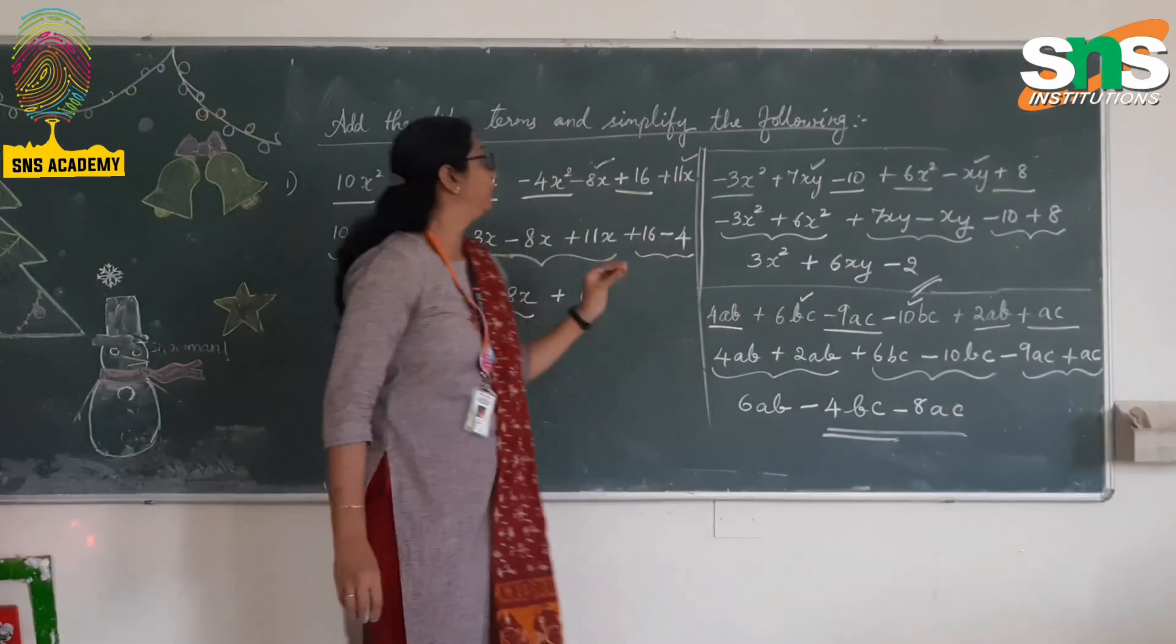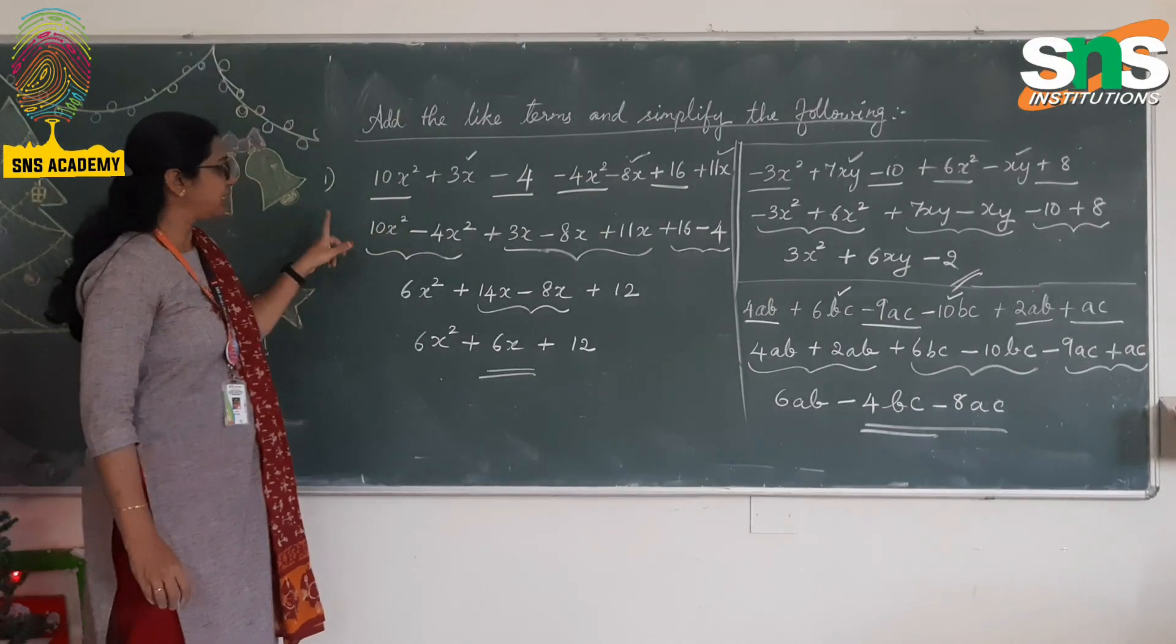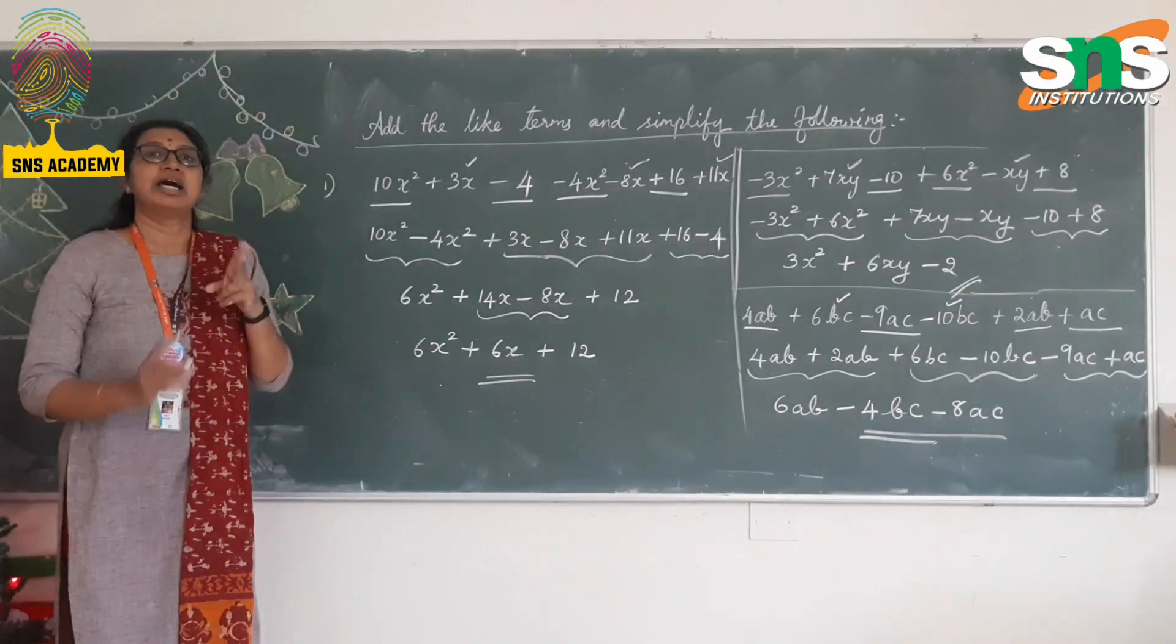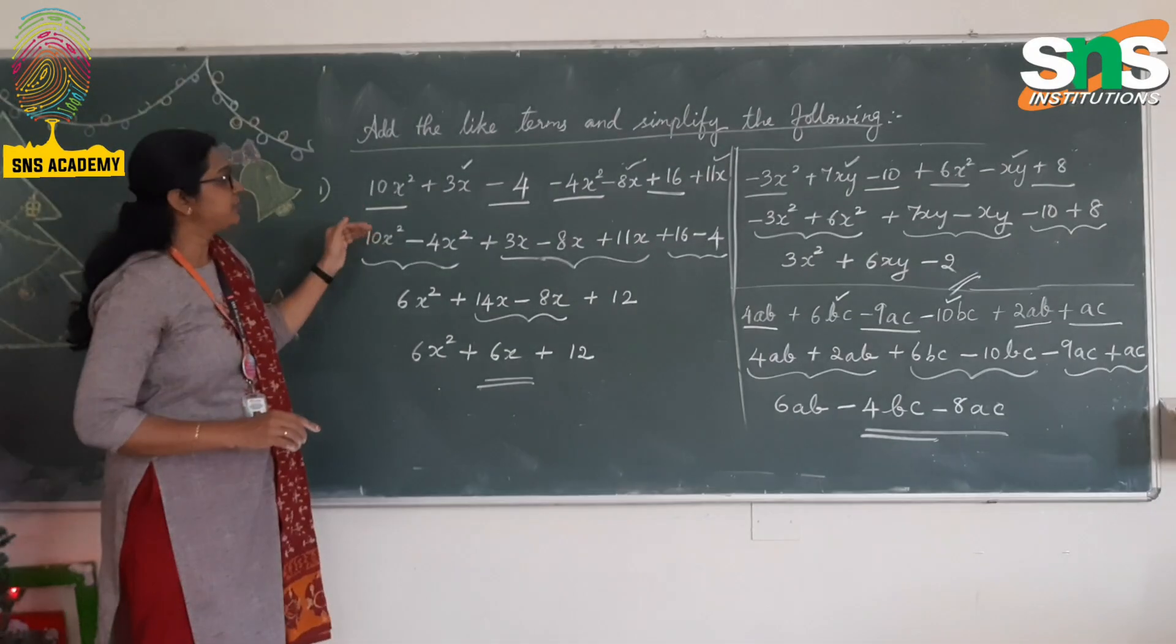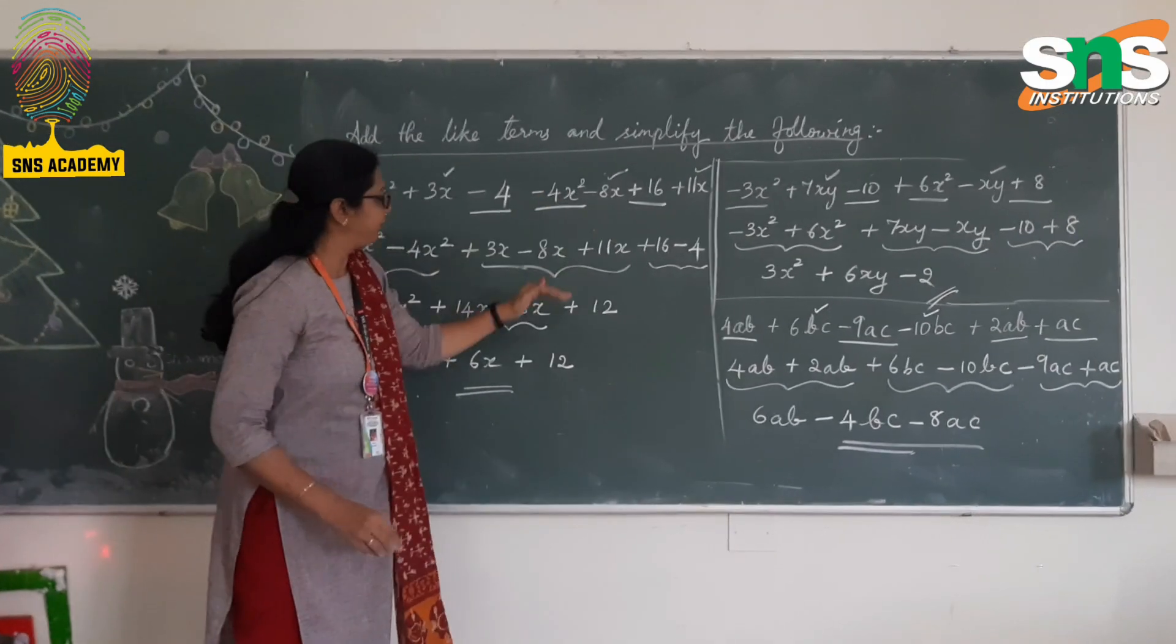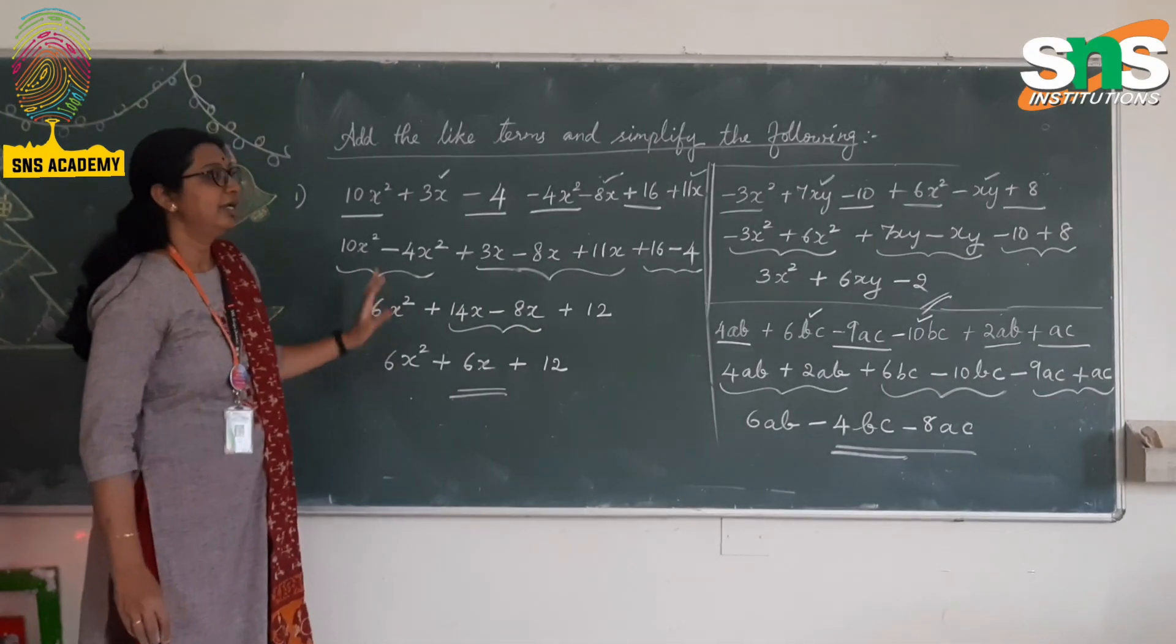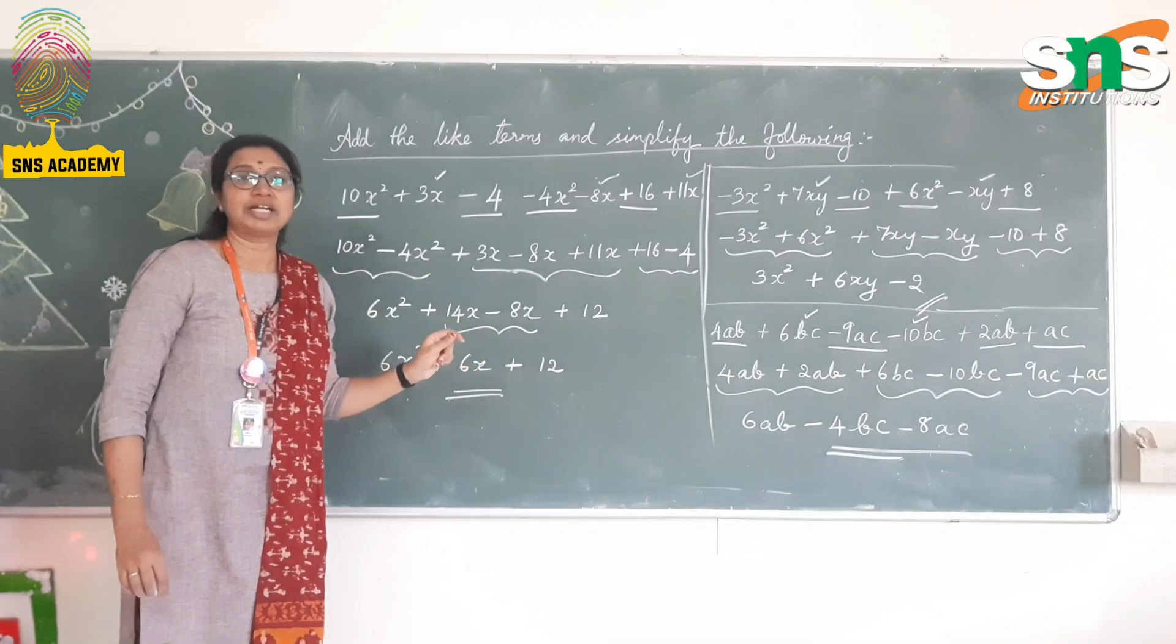This is how you will add the like terms by identifying the like terms and rearranging them. The first step is rearranging the terms according to the like terms. And then you have to simplify them accordingly. This is how you will solve the given expression.